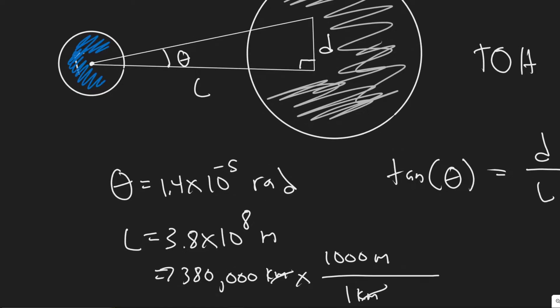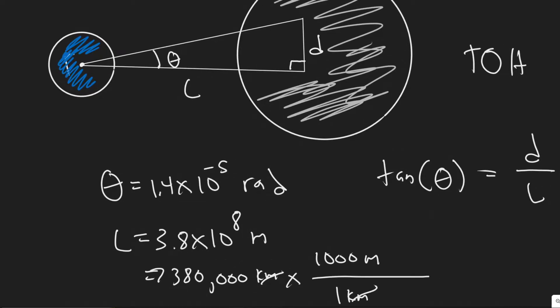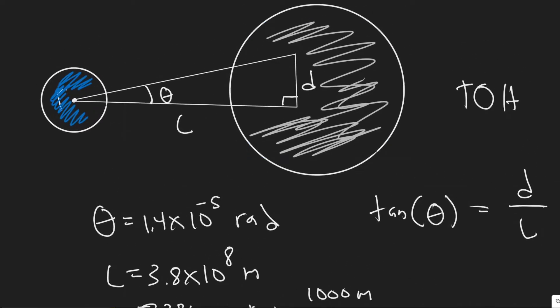And they also give us theta, which is the angle, 1.4 times 10 to the minus 5. And what we're trying to find is this value of D.